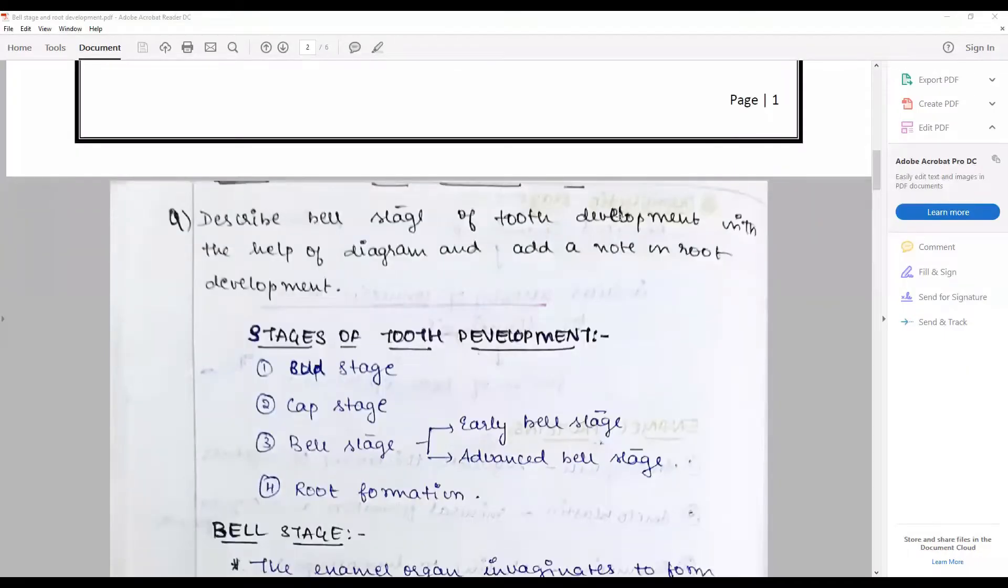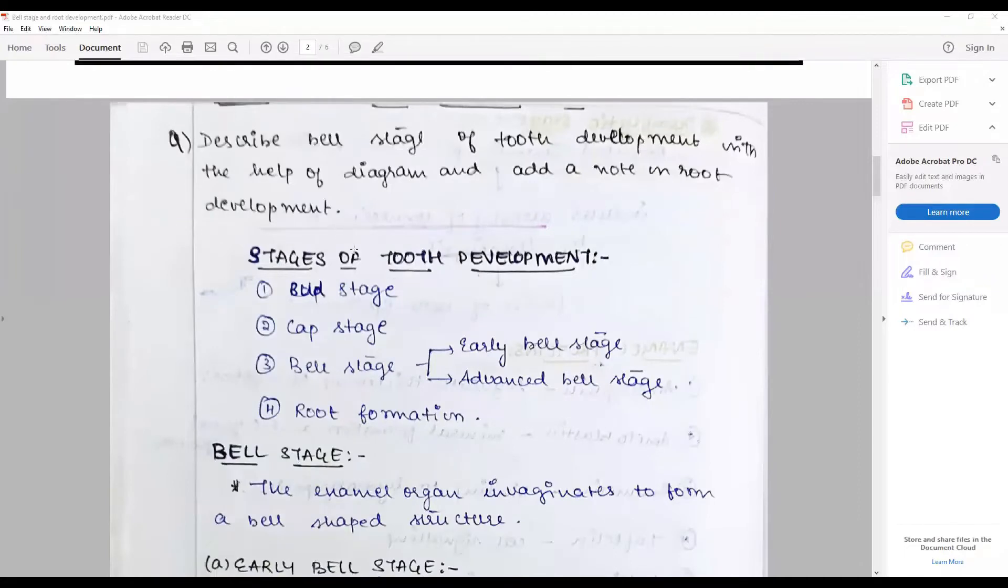Okay, moving on, first outline the stages of tooth development neatly: bud stage, cap stage, bell stage, wherein we have early bell stage, advanced bell stage, and the root formation. Some of you would be comfortable saying it first, second, third, fourth, fifth - it is individual choice, but it is necessary that you include all these five steps carefully.